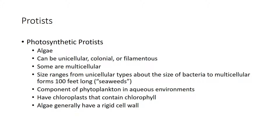Photosynthetic protists tend to be like plants — for instance, algae. They can be multicellular, unicellular, colonial, or filamentous. Sometimes they can range from very small unicellular organisms up to about 100 feet long, like seaweed. They're a component of phytoplankton in aqueous environments, which is basically food at the lower part of the food chain. They do have chloroplasts with chlorophyll and typically have a very rigid cell wall.